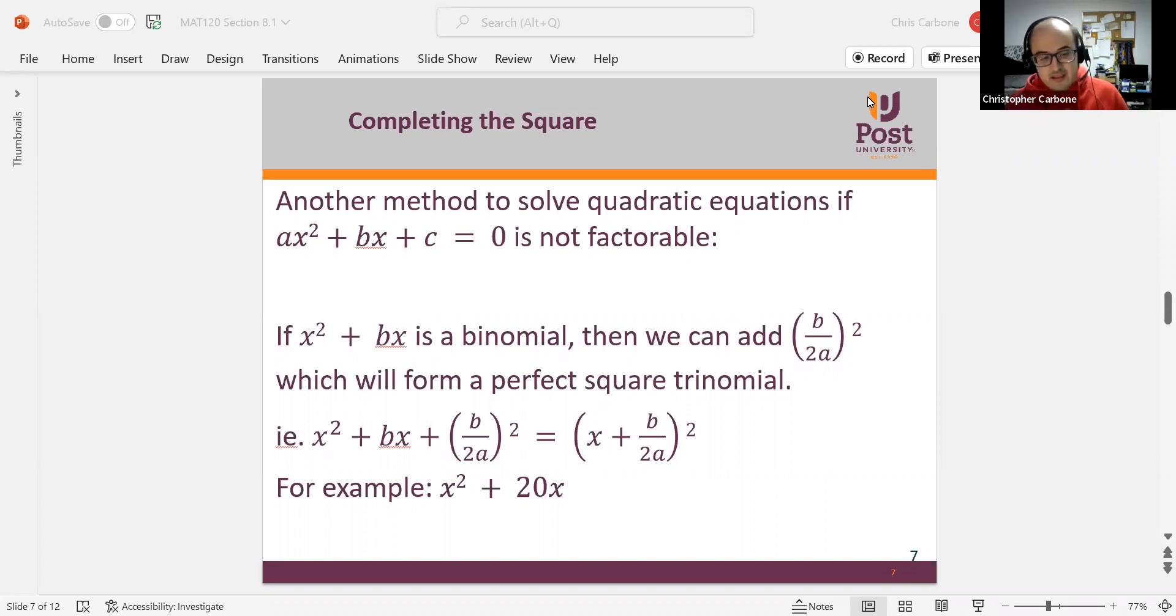This is another method to solve quadratic equations if ax squared plus bx plus c equals 0 is not factorable. If we have x squared plus bx as a binomial, then we can add b divided by 2a squared, which will form a perfect square trinomial that we could then use to factor. So adding that would make x squared plus bx plus b divided by 2a squared, and we could factor that to just be x plus b over 2a squared.